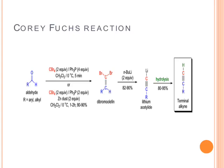This is the general reaction. This whole process involves three steps: first is conversion of aldehyde to dibromo olefin, dibromo olefin to lithium acetylide, which finally generates terminal alkynes. Formation of dibromo olefin can be done by two possible ways. The first is addition of aldehyde (one equivalent) to a mixture of triphenylphosphine (four equivalents) and carbon tetrabromide (two equivalents). The second method is addition of aldehyde to a reagent prepared by mixing zinc dust (two equivalents) with triphenylphosphine (two equivalents) and carbon tetrabromide (two equivalents).